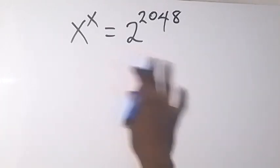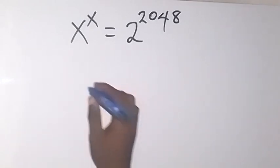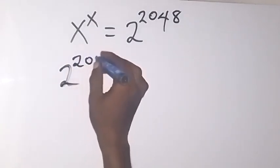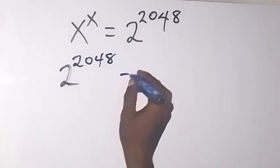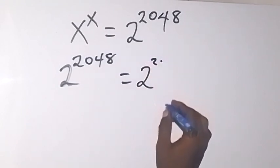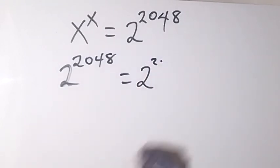Now let's look at the right hand side. We can write this as 2 raised to power 2048. We can write this as 2 raised to power 2 times 1024.